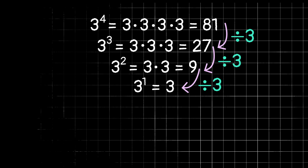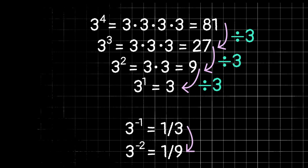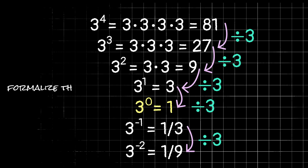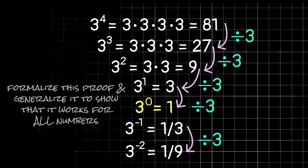This even works with negative exponents. For example, 3 to the negative 1 power would be 1/3, and 3 to the negative 2 power would be 1/9. Going from negative 1 to negative 2, we subtract 1 from the exponent and divide the result by 3 — the pattern carries through. So it would only make sense that going from 3 to the 1st power to 3 to the 0 power, we take 3 and divide by 3, giving us 1. So 3 to the power of 0 equals 1.